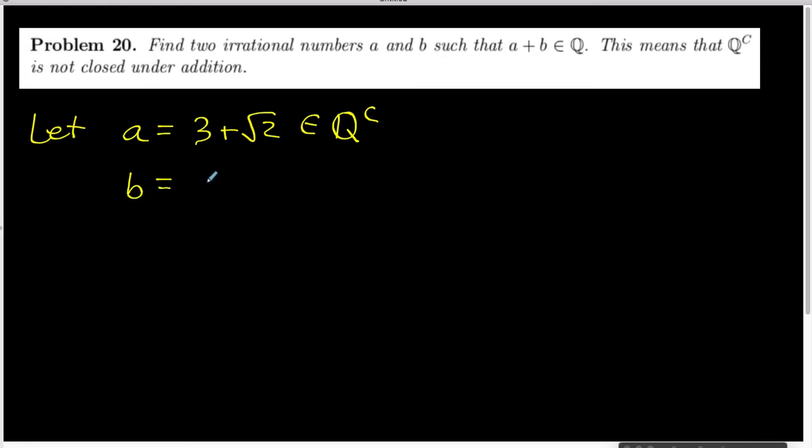And I'm going to let B be, let's make it something like 4 fifths minus the square root of 2. And this is also an irrational number for the same reason.